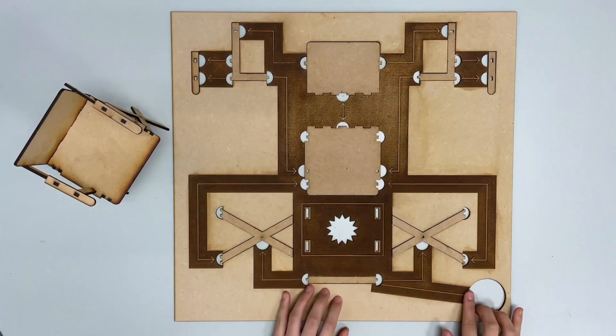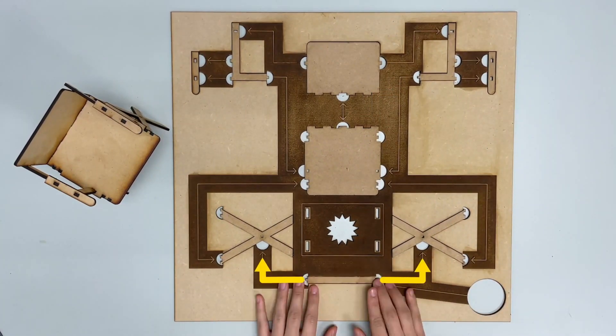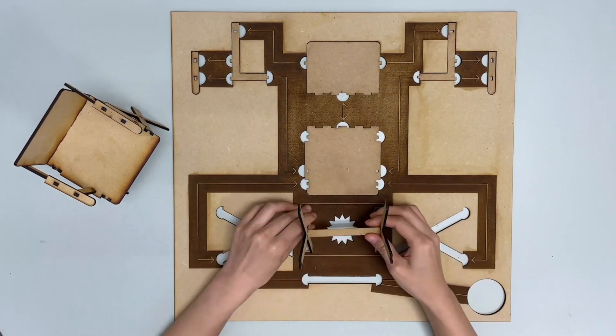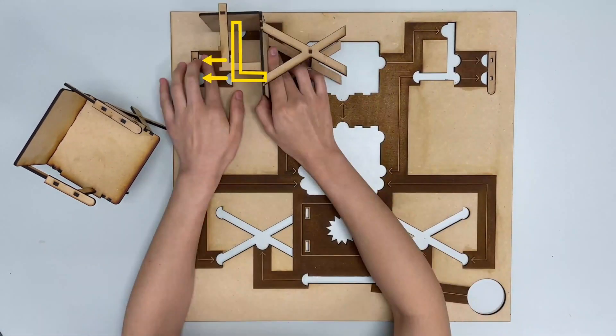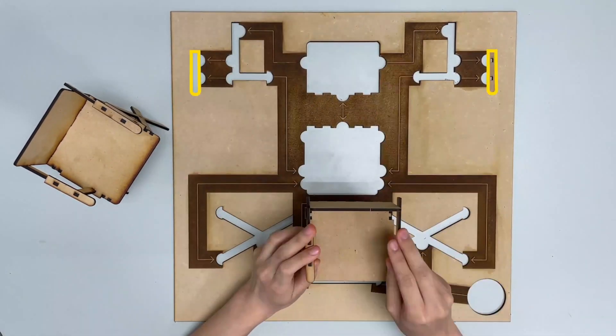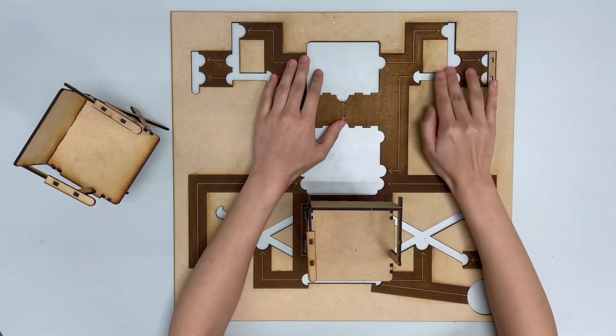Assembling users can follow the tactile aids generated by Daedalus, such as entry component, tactile arrows, assembly order based on proximity, and symmetrical arrangement. With Daedalus, users can perform more accurately on laser cut assembly tasks.